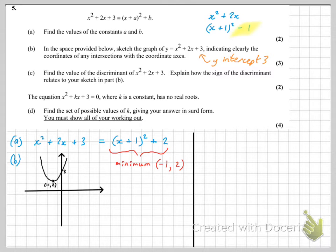Now, part C asks us to find the discriminant. Well, that's pretty straightforward. We've done that already earlier in this paper. B squared minus 4ac just comes out to be 2 squared, take away 12. So minus 8.